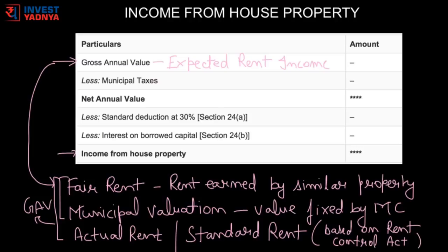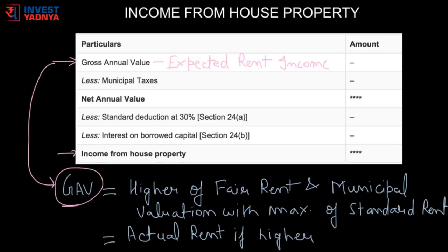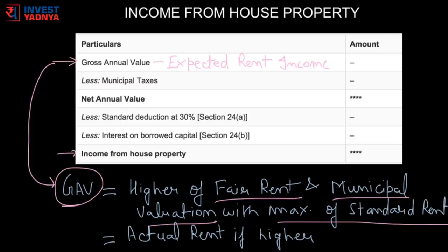The Rent Control Act is enforced in various states such as Maharashtra, where a court can fix a standard rent of a property and a permitted increase each year. So gross annual value is the higher of fair rent and municipal valuation if the property is not rented out, subject to a maximum of standard rent. But if the property is rented out and actual rent is higher than any of these three, then gross annual value will be the actual rent. Do remember, loss due to vacancy can be deducted from the income from house property.